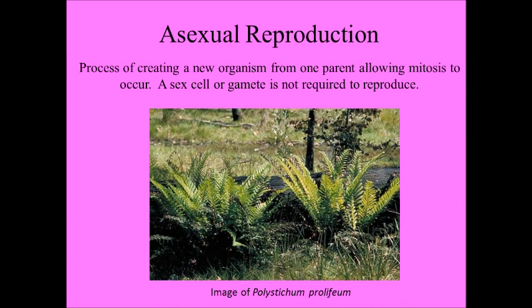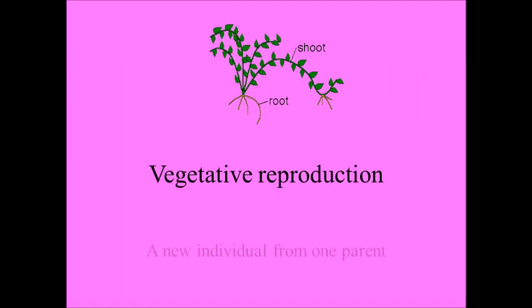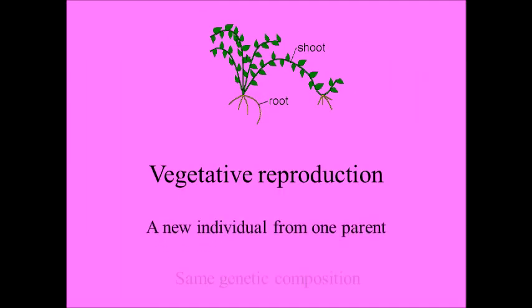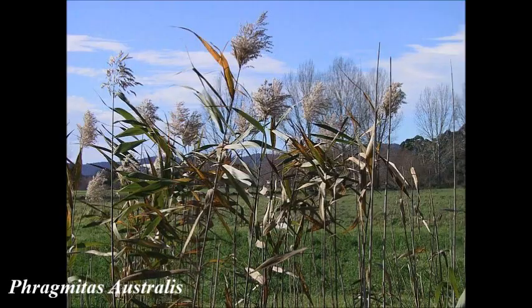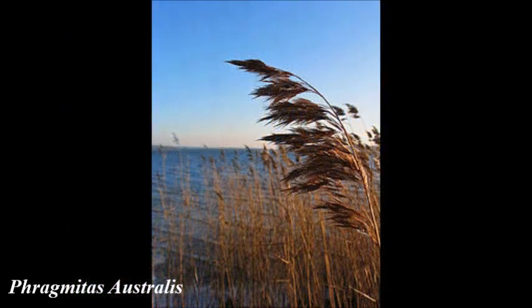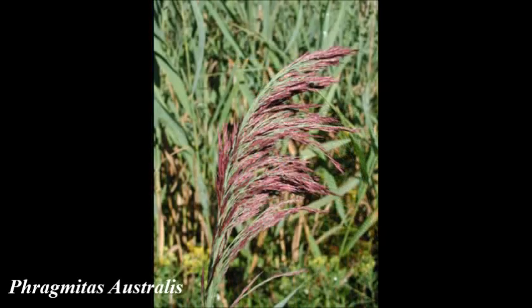Asexual reproduction is the process of creating a new organism from one parent plant, allowing mitosis to occur. A gamete is not required to reproduce. Vegetative reproduction involves creating a new individual from one parent with the same genetic composition, or it is simply cloned. Phragmites australis is a common reed amongst most aquatic environments that can spread quickly by suckering through their habitat.